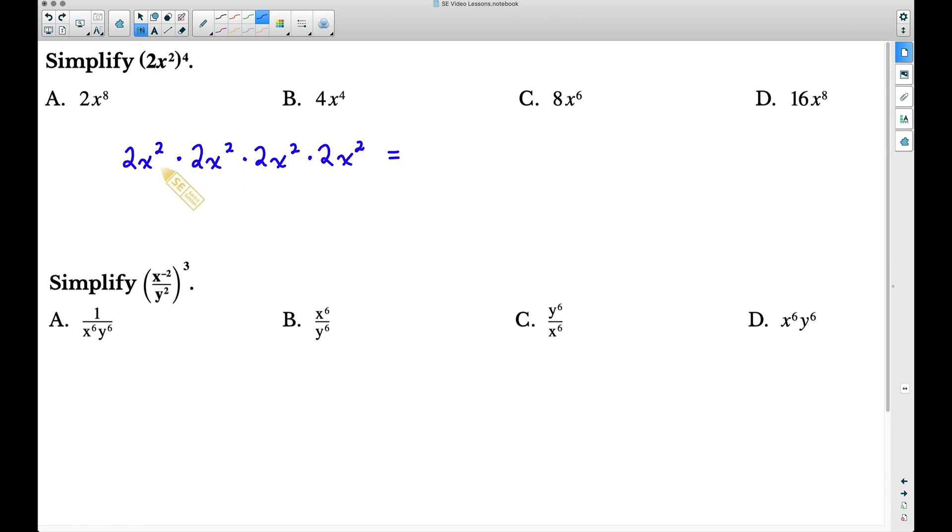Let's work this out by working with the twos first. 2 times 2 is 4 times 2 is 8 times 2 is 16. Now if we apply our product rule, we can add the exponents of these x's because we have the same bases here. 2 plus 2 is 4 plus 2 more is 6 plus 2 more gives us 8. We can add the exponents to get x to the eighth power. 16x to the eighth is our answer.